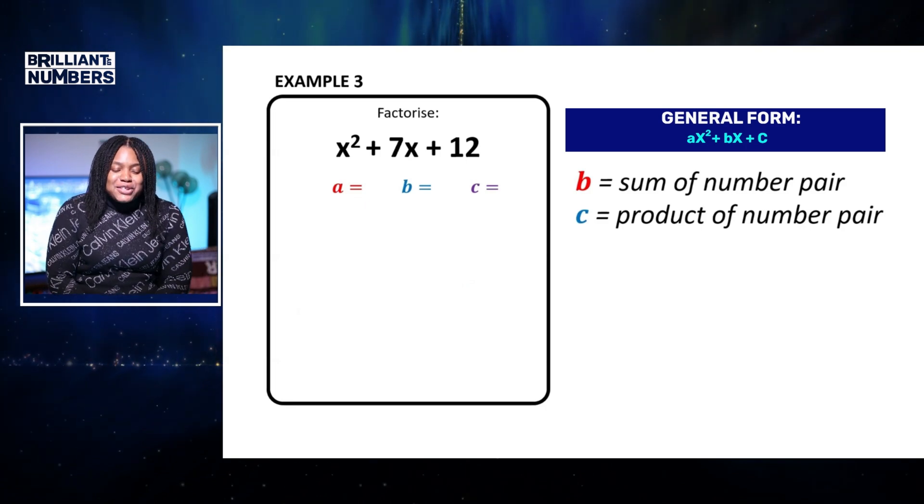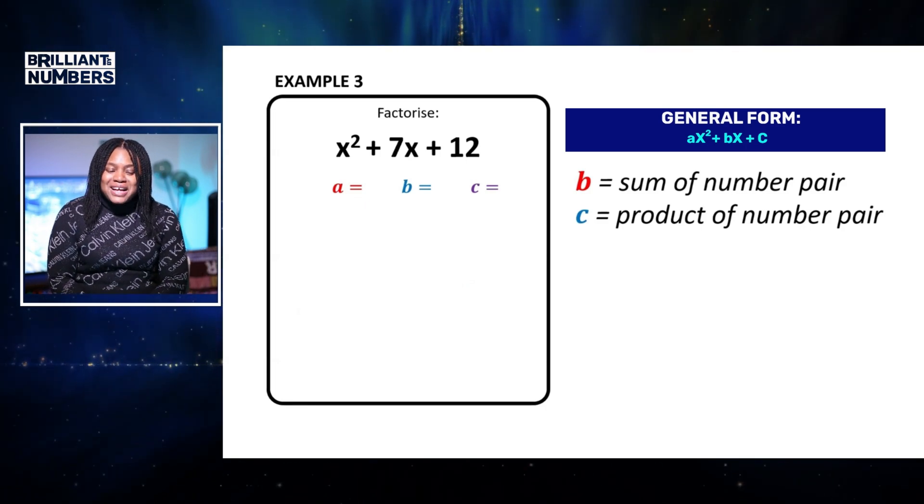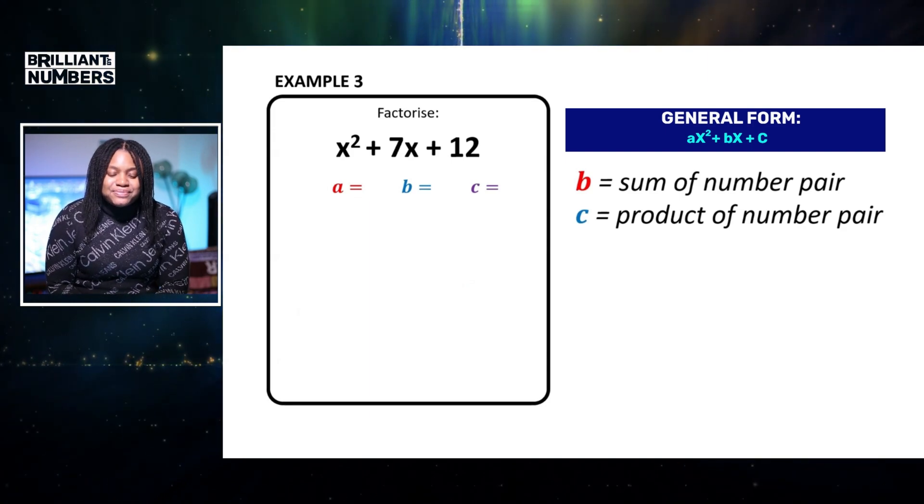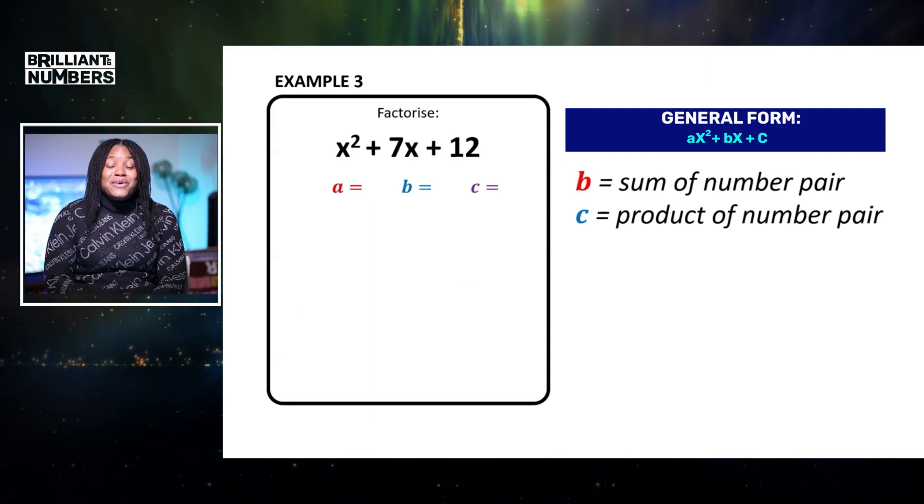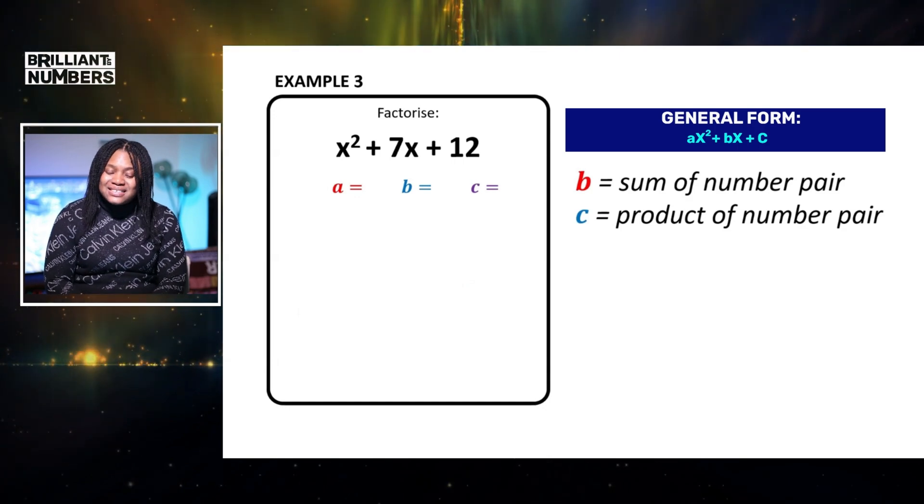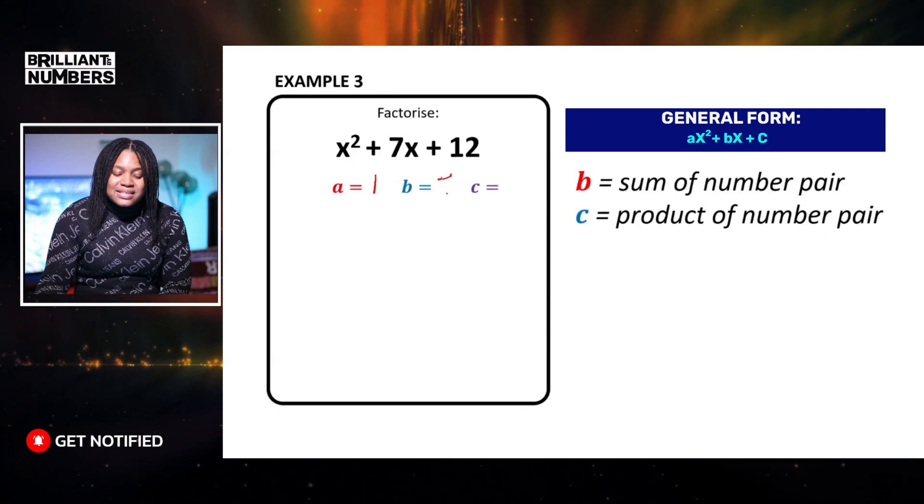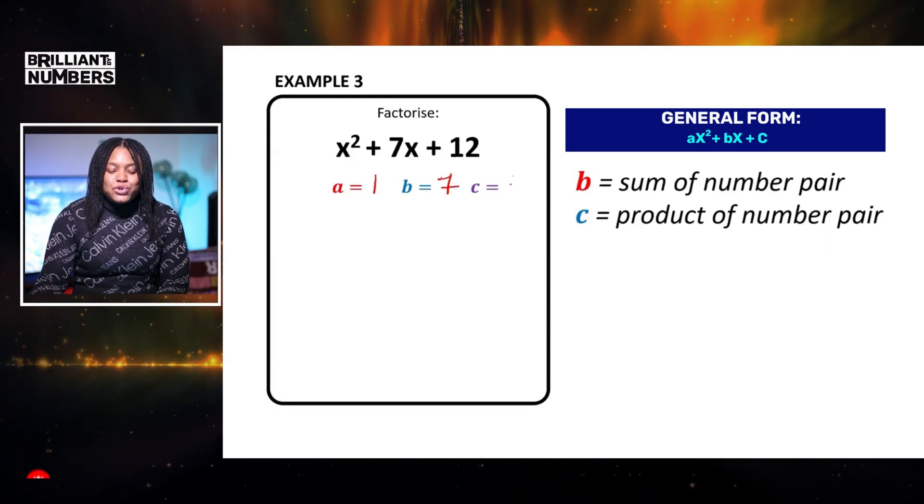So in this question we're asked to factorize x squared plus 7x plus 12. Again, we're going to write down a, b, and c. So a is equal to 1, b is equal to 7, and c is equal to 12.